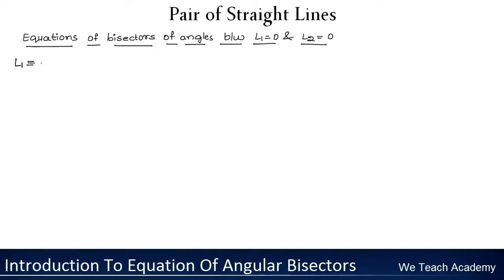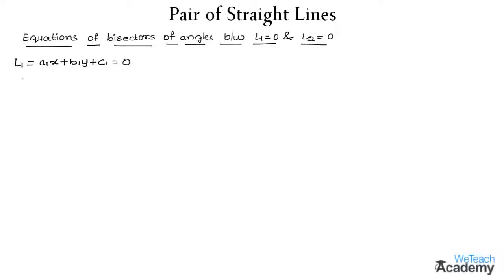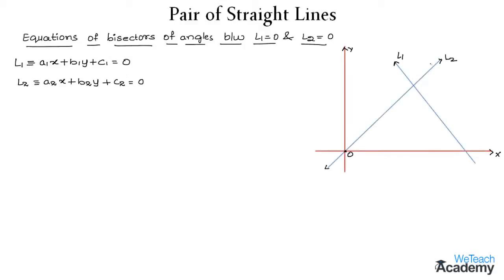Let us assume a line L1 as a1x plus b1y plus c1 equal to 0, and L2 as a2x plus b2y plus c2 equal to 0. These both are the given lines. Now let us represent this on a coordinate plane, where these lines are represented using L1 and L2, and we consider the bisectors of the angles formed by these lines.